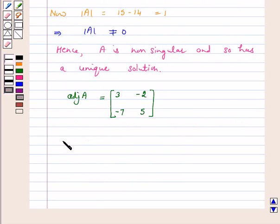Now A inverse is equal to 1 over determinant A into adjoint A, which is equal to 1 over 1 into [3, -2; -7, 5].